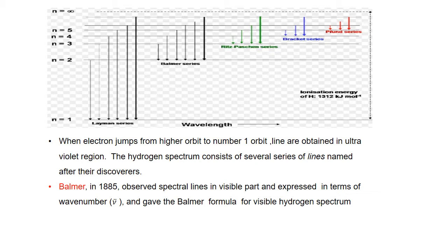When an electron jumps from a higher orbit to number 1, this series is called the Lyman series, observed in the ultraviolet region. The first scientist studied this in 1885, observing spectral lines in the visible region and determining frequency and wave numbers.